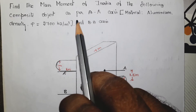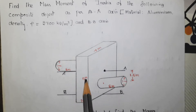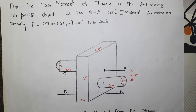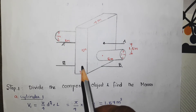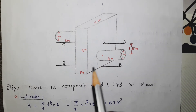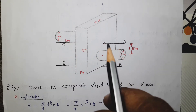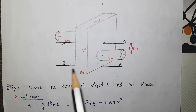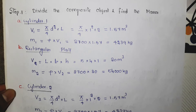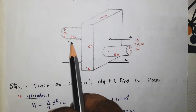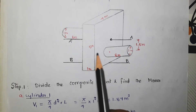Find the mass moment of inertia of the following composite object about AA axis and BB axis. Here is the composite object. The given material is aluminium and the density is 2700 kg per meter cube. There is a rectangular plate in the middle and there are two cylinders on both sides of it — one at the bottom and another one at the top. The AA axis is passing exactly at the center of gravity of the rectangular plate and the BB axis is passing at the bottom of the rectangular plate. The first step is to divide the composite object: the three objects are the rectangular plate, cylinder one, and cylinder two.